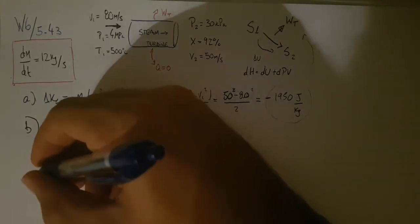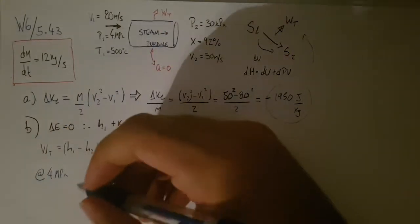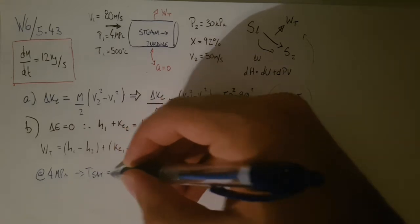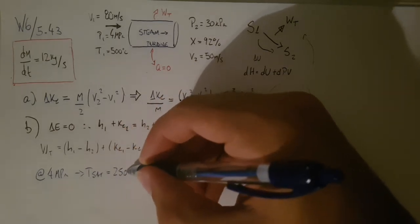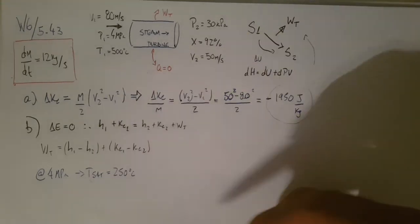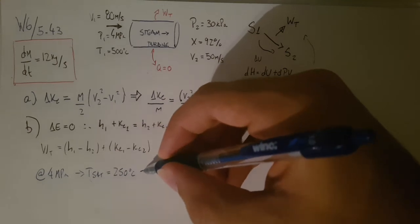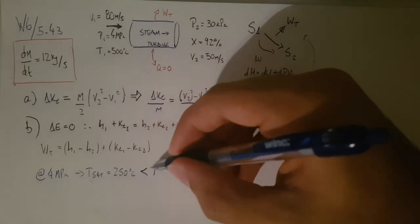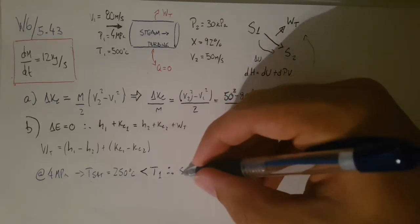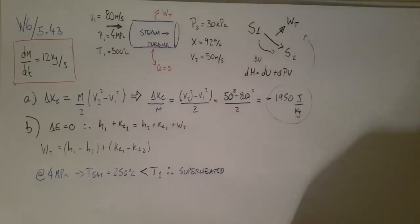So if we go to the table and we look at 4 megapascals, which is our initial state, you'll see that T sat is 250. So if my saturation temperature is 250 and my actual temperature is 500, that means, let's put it this way, T sat is smaller than T1, therefore, it's superheated.